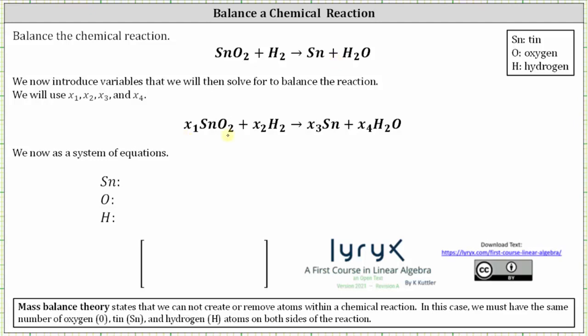On the left, because we have one atom of tin, on the right we also have one atom of tin. The coefficients must be equal, meaning x sub one must equal x sub three.